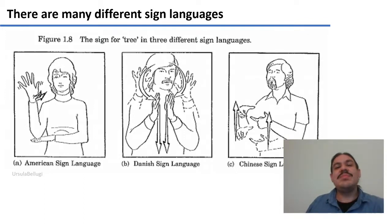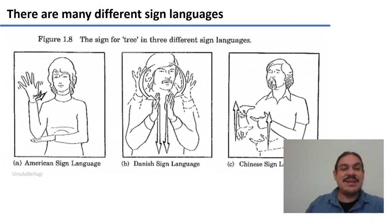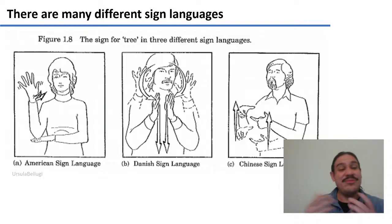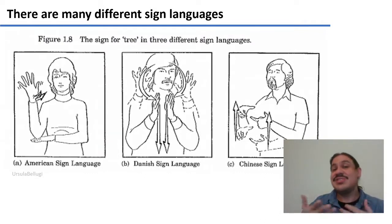There are many sign languages and they're all different from one another, just as spoken languages are. For example, this is the word 'tree' in American Sign Language, Danish Sign Language, and Chinese Sign Language. As you can see, they're as different as English, Danish, and Chinese are from each other.